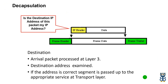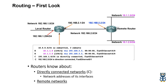Now let's understand what routing is. Networking devices make best path decisions based on the layer 3 destination IP address. This is not the end of routing — we have a lot more information about routing, and we will cover all aspects of routing in later videos. For now, we will cover everything step by step.